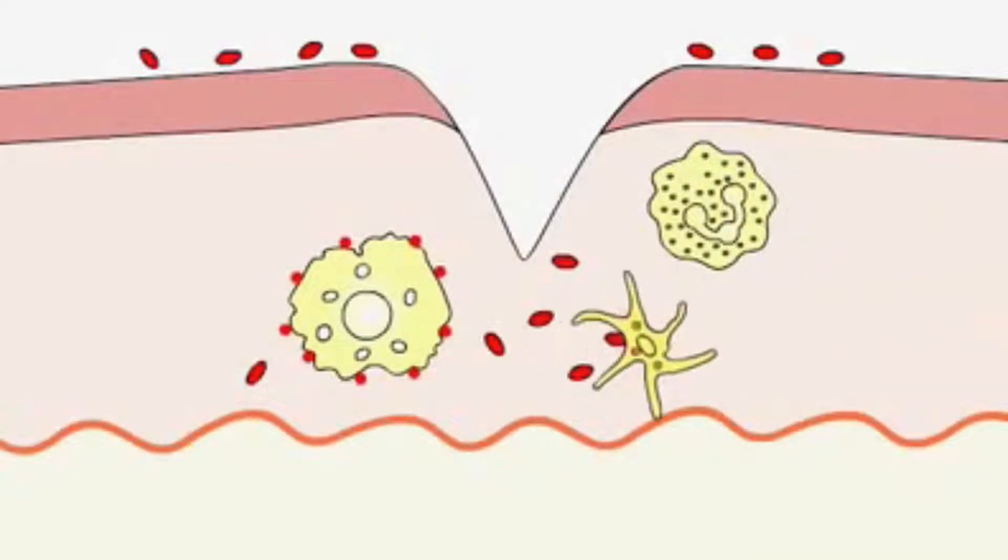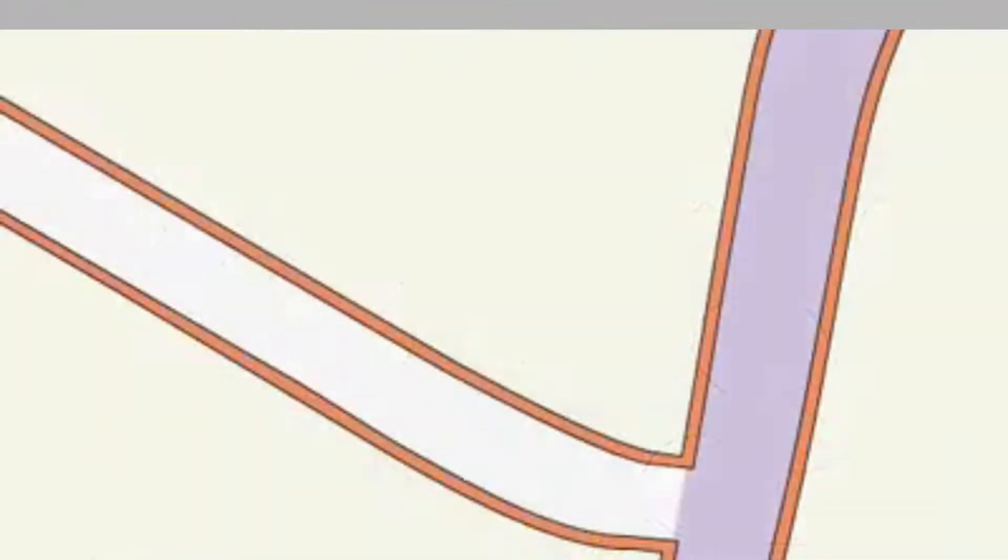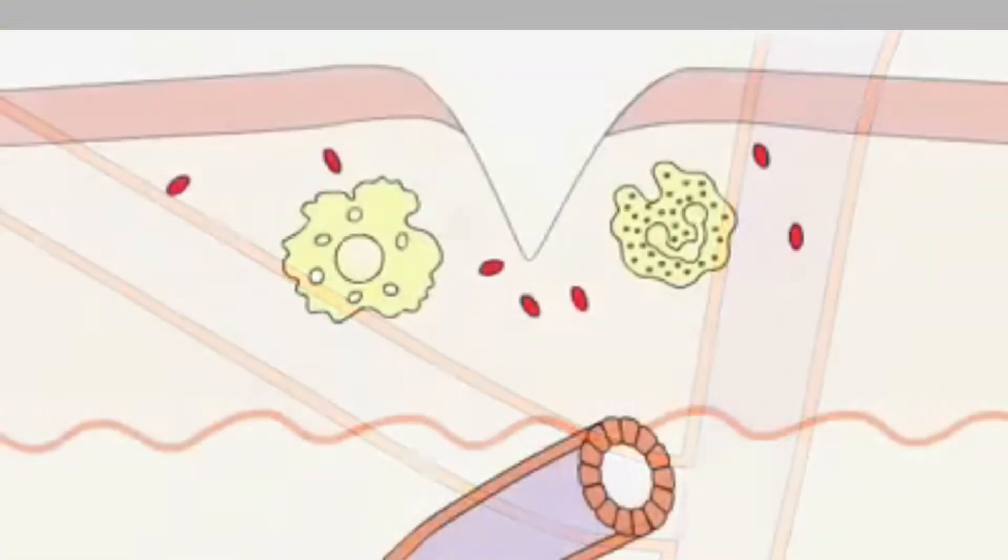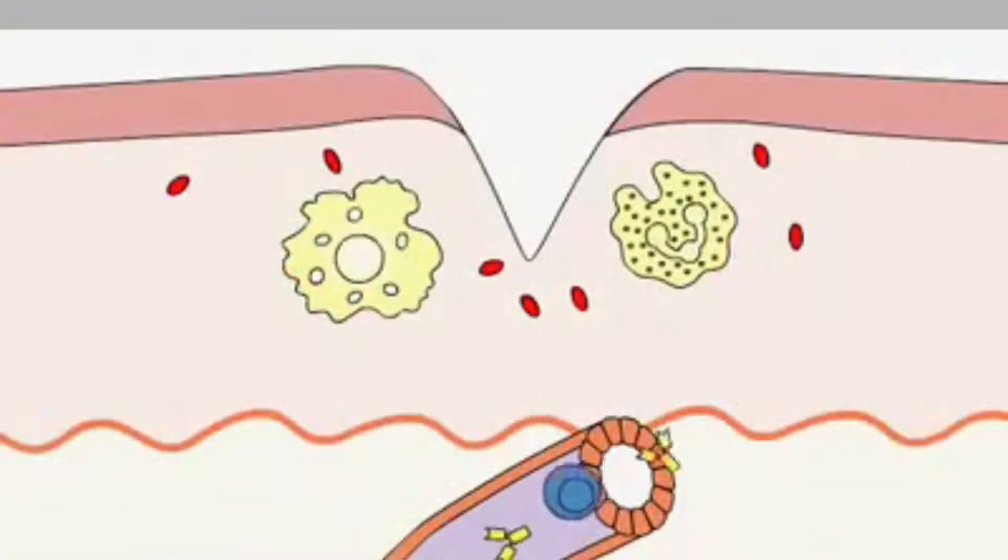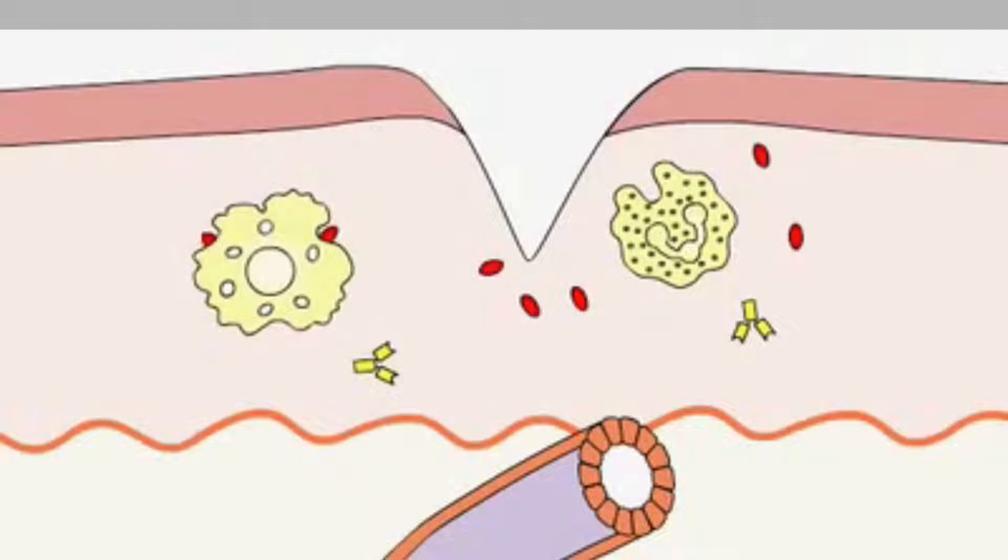When the macrophages fight for too long, they call in heavy backup by releasing messenger proteins that communicate location and urgency. Neutrophils leave their patrol routes in the blood and move to the battlefield. The neutrophils fight so furiously that they kill healthy cells in the process. On top of that, they generate barriers that trap and kill the bacteria. They are indeed so deadly that they evolved to commit suicide after 5 days to prevent them from causing too much damage.